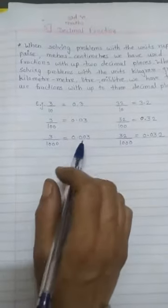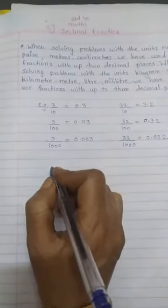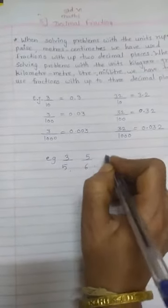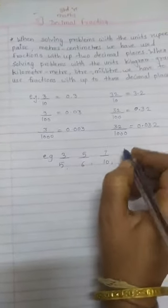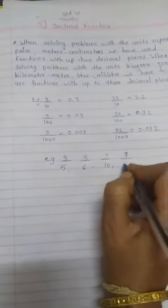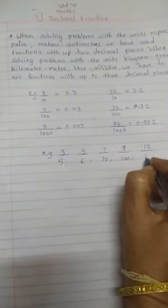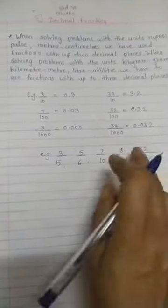You know fractions. For example, here 3 by 5, 5 by 6, 7 by 10, 8 by 100, suppose 12 by 1000. These all are our fractions.